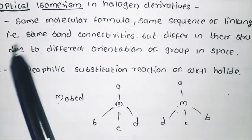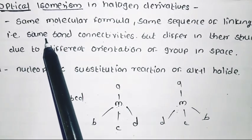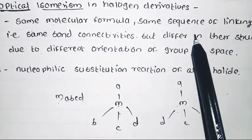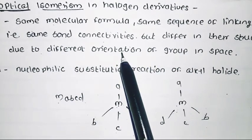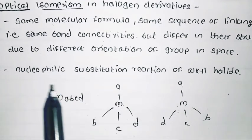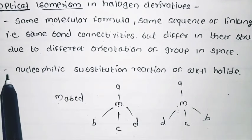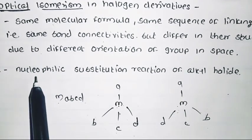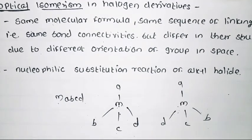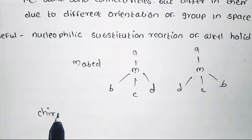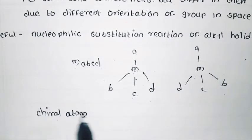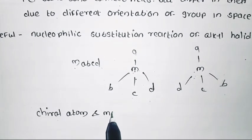Isomers means same molecular formula, same bond connectivity, but different structure due to different orientation of groups in space. This optical isomerism is useful to understand nucleophilic substitution reactions of alkyl halides. Next point: chiral atom and molecular chirality.